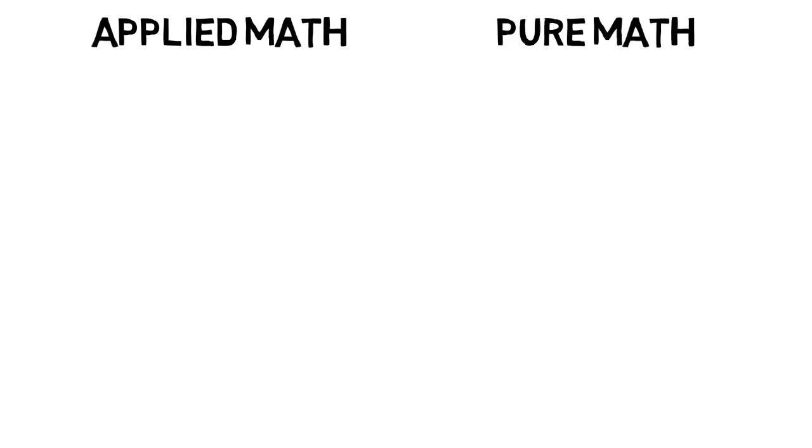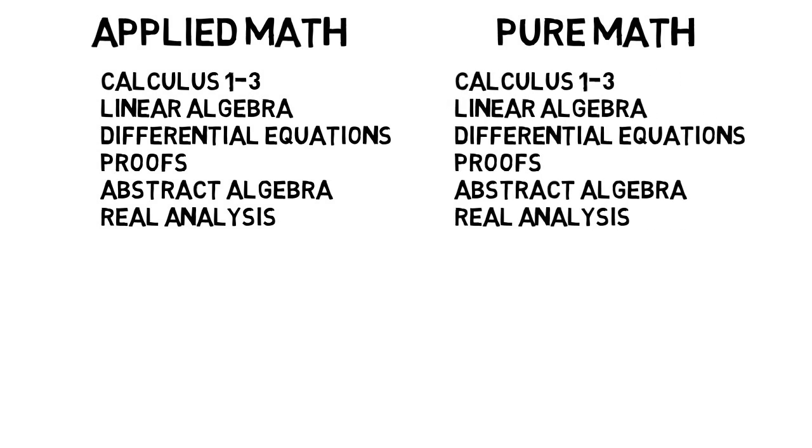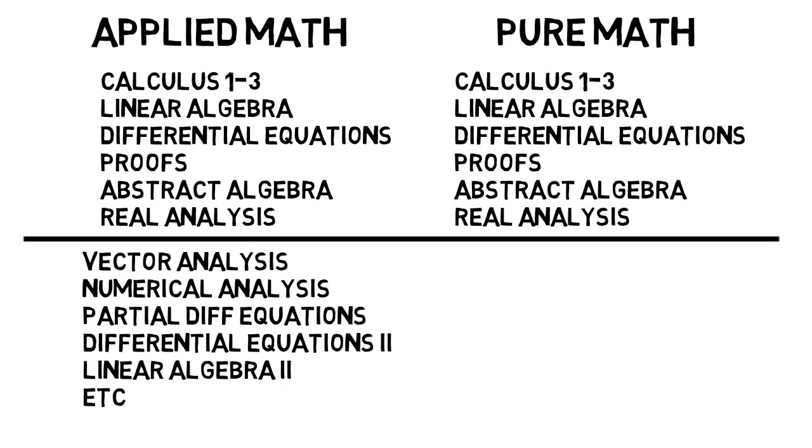But now to sum up all the classes, there is overlap with applied math students and pure math students. Regardless of which path you choose, you will take the calculus series, linear algebra, differential equations, that first proofs class, one abstract algebra course, and a real analysis course. Then as an applied math student, you'd take classes like vector analysis, numerical analysis, partial differential equations, and more. All the things that have more obvious applications to other fields.